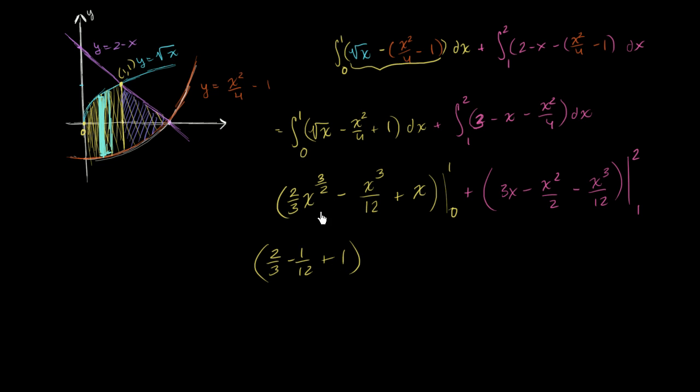So this is what the yellow stuff simplified to. And then this purple stuff, first you evaluate it at 2. You get 6 minus 2 squared over 2 is 2. Minus 8 over 12. And then from that you're going to subtract this evaluated at 1. So it's going to be 3 times 1. It's 3 minus 1 half minus 1 over 12.